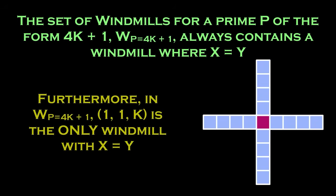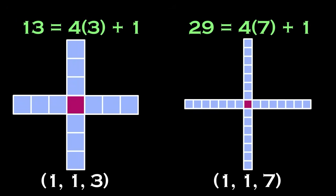And furthermore, we'll note that the only windmill for both of these numbers where x equals y is of the form 11k. For 13, k is 3 in the equation and in the windmill. Likewise for 29, k is 7 in the equation and in the windmill.